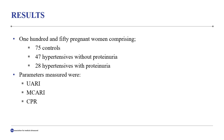150 pregnant women comprising 75 controls were enrolled. The hypertensives were further divided into 47 without proteinuria and 28 with proteinuria. The parameters measured were the umbilical artery resistivity index, middle cerebral artery resistivity index, and the cerebral placenta ratio.